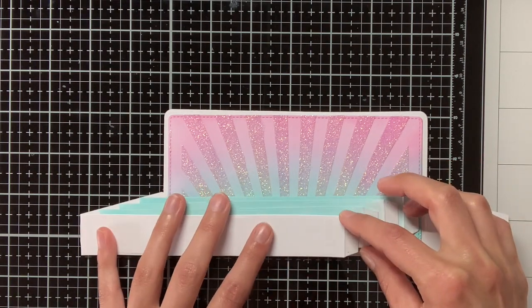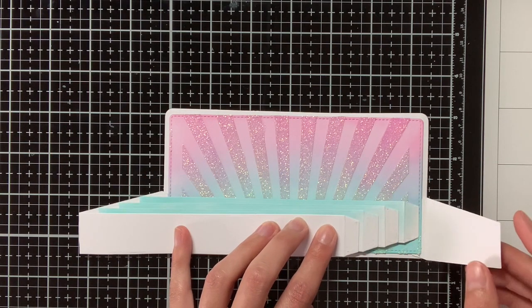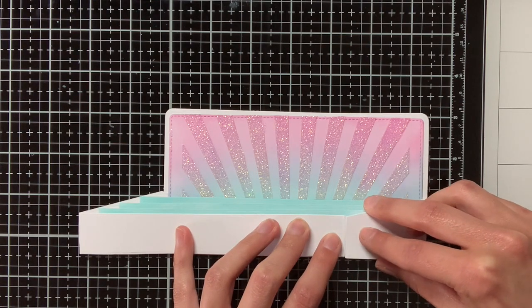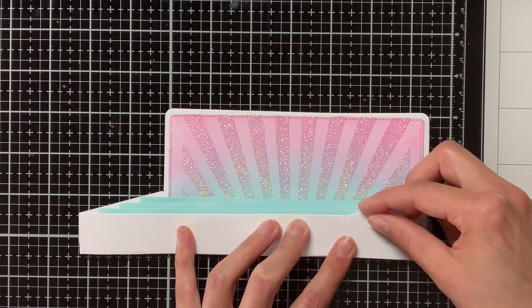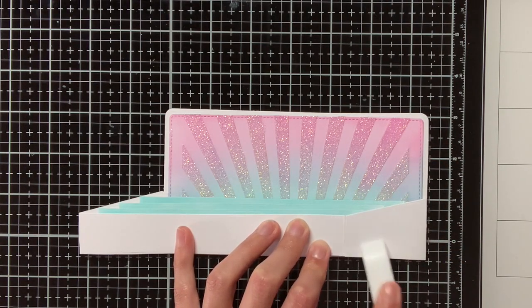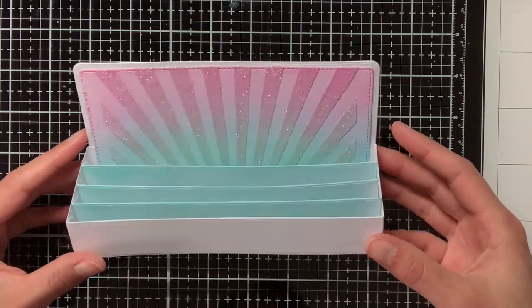So I have already removed the backing of the double sided adhesive, but I also need to check if all of those tabs are aligned with the top of that right side panel. And only then I will really put it down and then burnish it in with my bone folder.